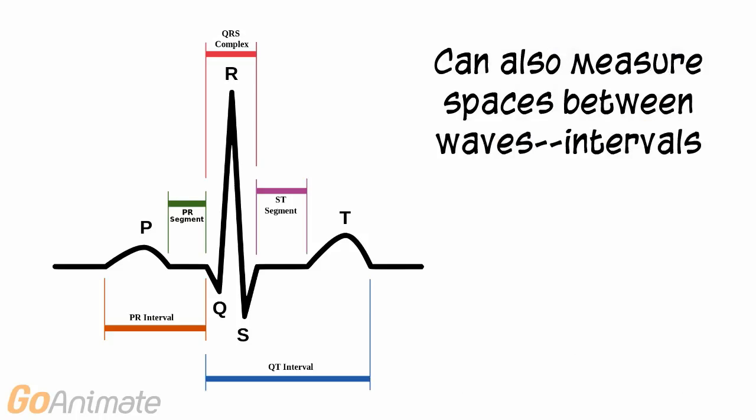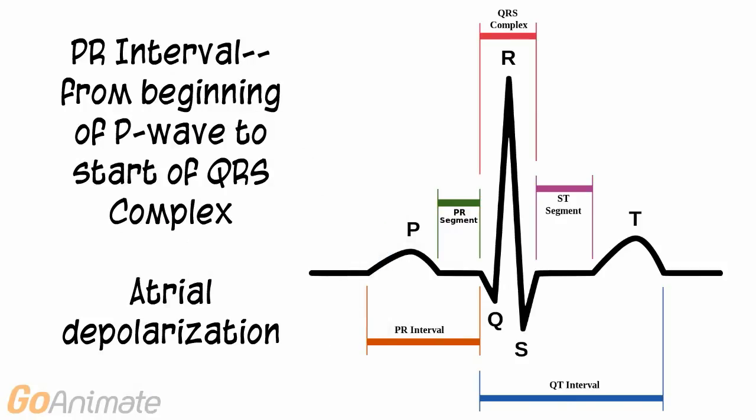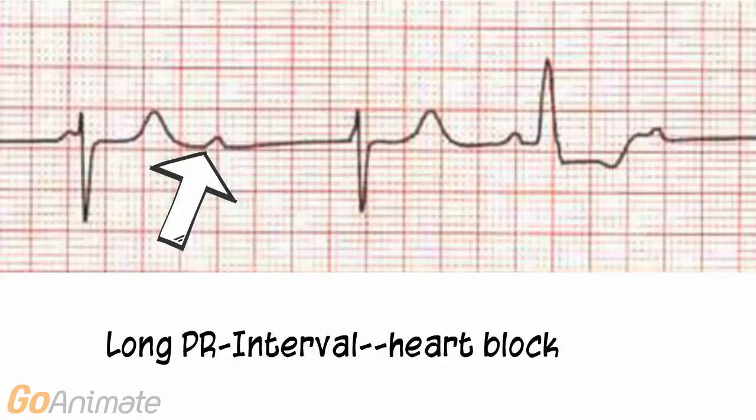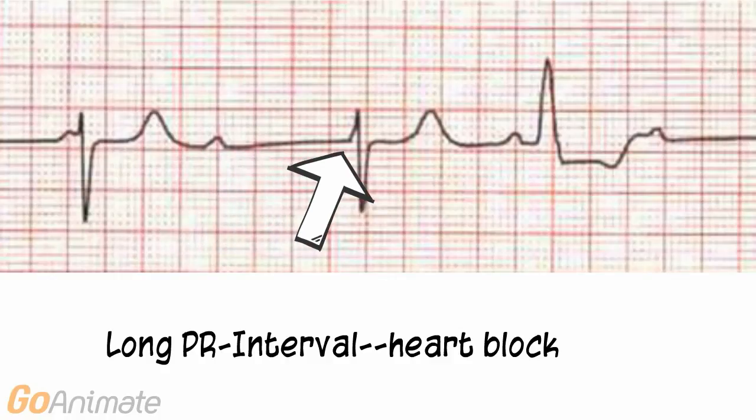We can also measure the spaces between the waves. These are called intervals or segments. The PR interval is measured from the beginning of the P wave to the start of the QRS complex and represents the time for atrial depolarization. An abnormally long PR interval indicates a heart block.